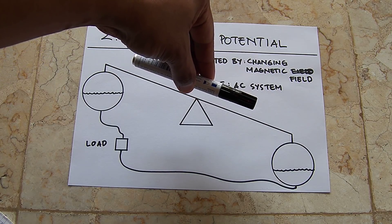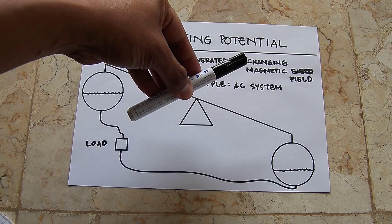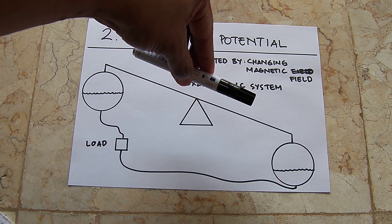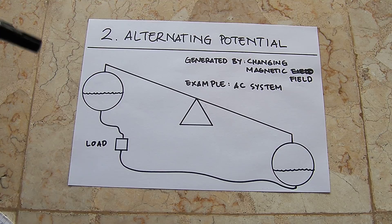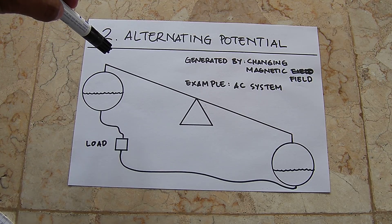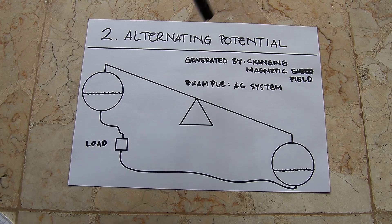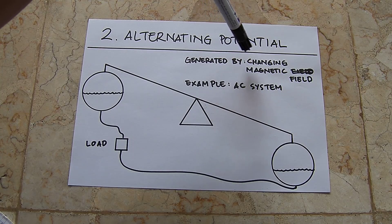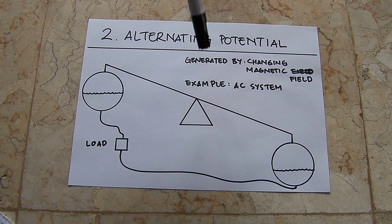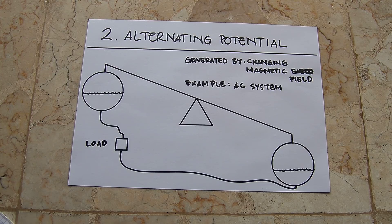Push, hold, push, hold, push, hold, and push. In electricity, you can generate this flow by changing a magnetic field, and the example for it is an AC system.